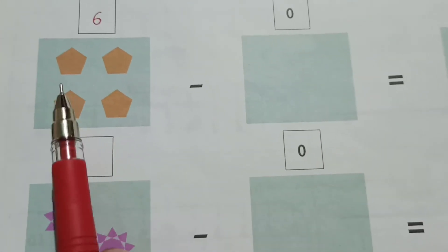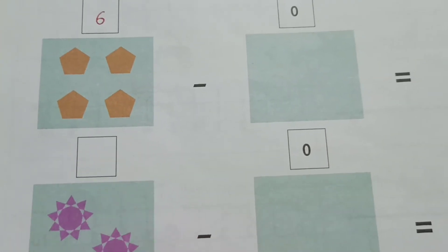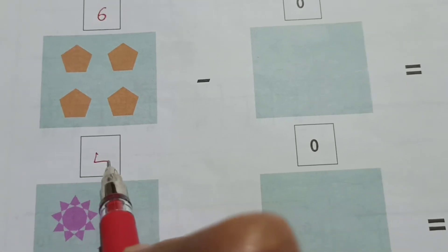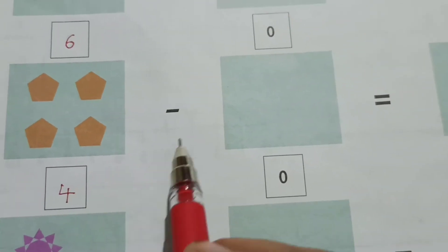Now here you can see 1, 2, 3, 4. So we will write here 4.